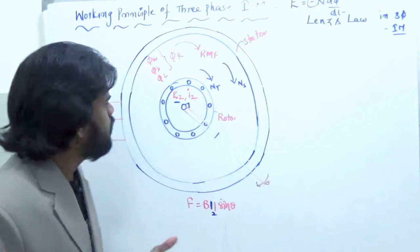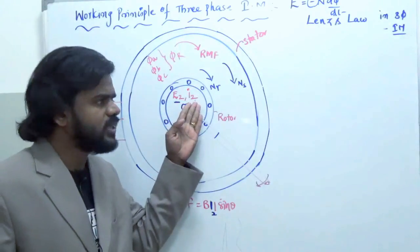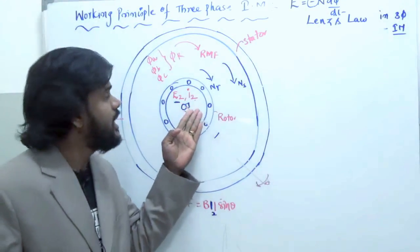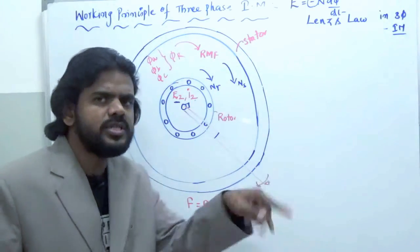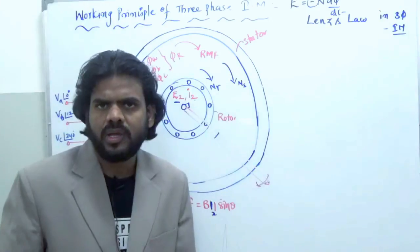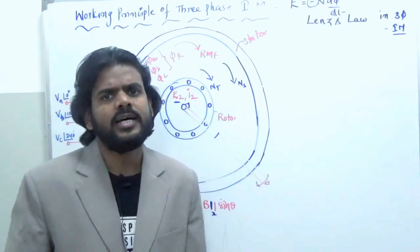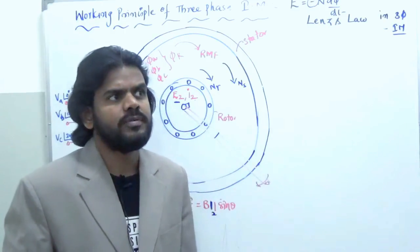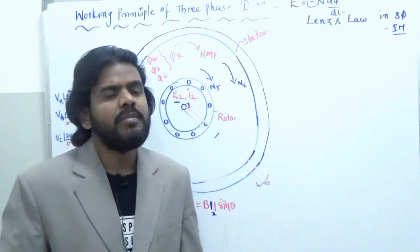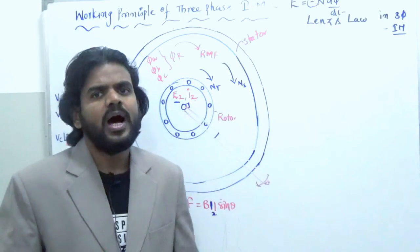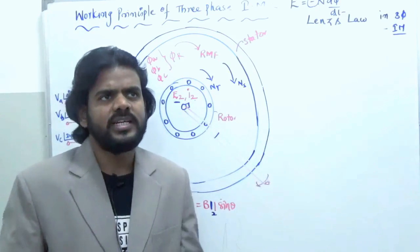As we have seen the working principle earlier, the current is induced in the rotor conductors through the process of induction, and thereby the rotor rotates. Now the question is: in which direction does the rotor rotate? The answer is it rotates in the direction of the synchronous speed — the rotor rotates along with the rotating magnetic field.